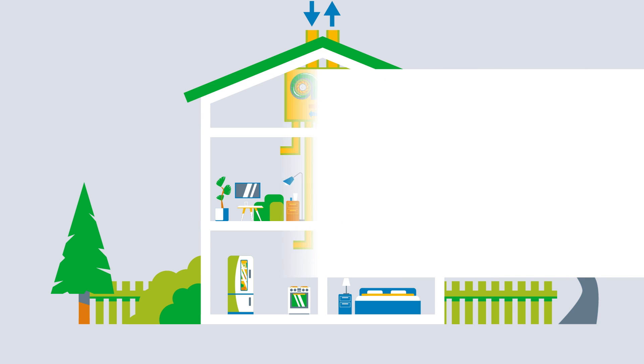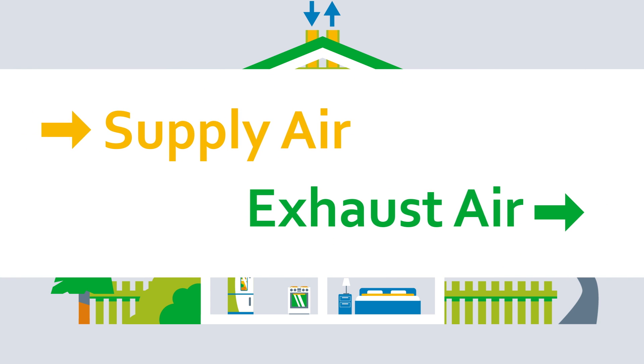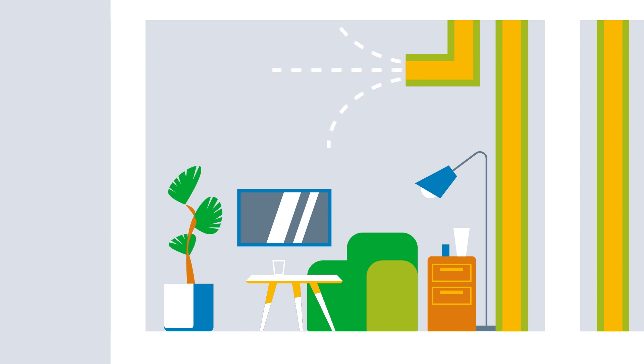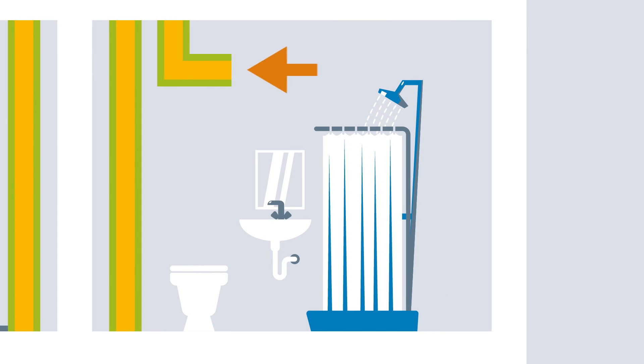There is a difference between supply air and exhaust air rooms, depending on how the space is used. For example, a living room is a typical supply air room, but a bathroom is an exhaust air room and the moist air is transported away.